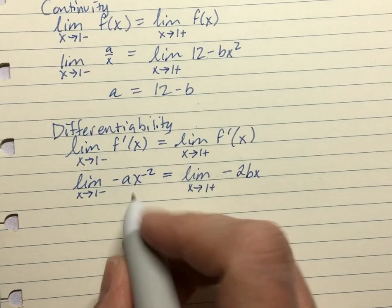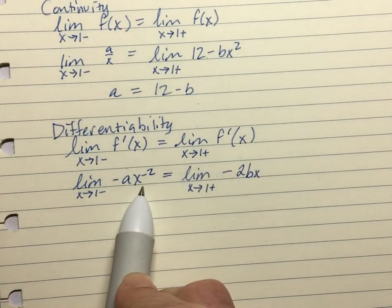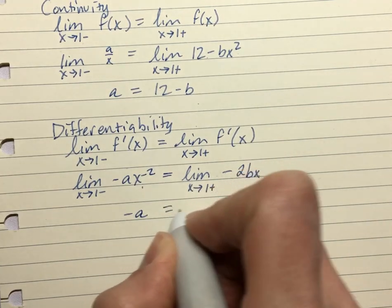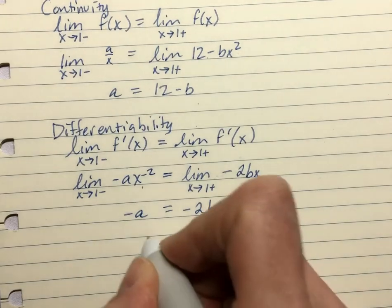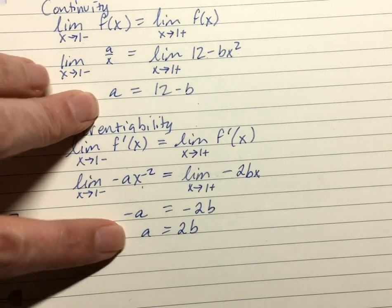I'm going to plug in my 1 to both of these. So then I end up with negative a times 1 to the negative 2 is just 1. And then plugging 1 in for x, we get negative 2b. So negative a equals negative 2b. So now I have a system of equations.